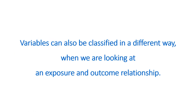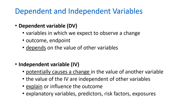Variables can also be classified differently when looking at an exposure-outcome relationship — as dependent or independent variables. Dependent variables are those in which we expect to observe a change; this is the outcome variable or endpoint, and it depends on the value of other variables. Independent variables can potentially cause a change in the dependent variable. The value of independent variables is independent of other variables, but the value of dependent variables actually depends on the values of the independent variables.